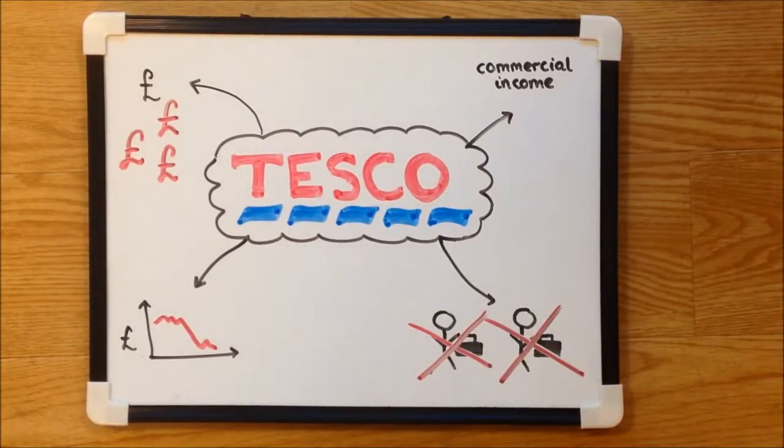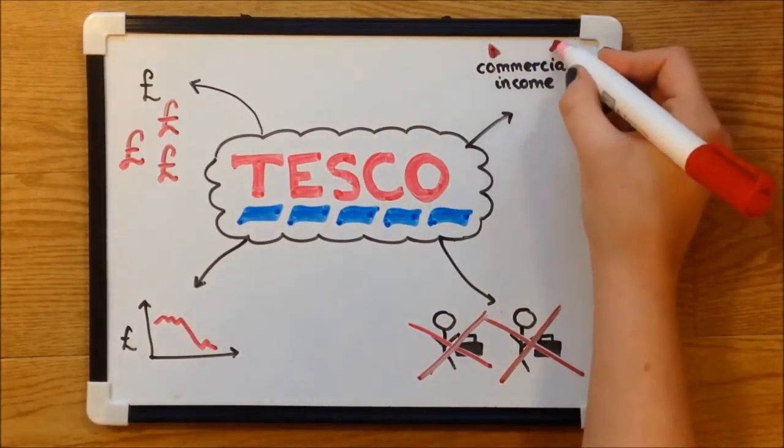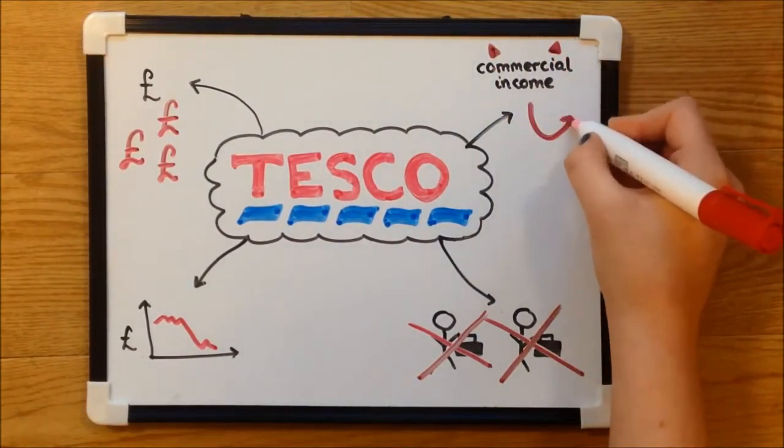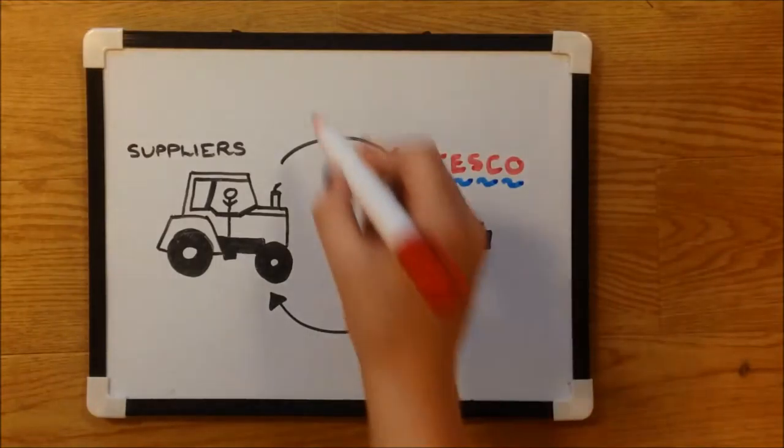Following the announcement, Deloitte began an investigation and uncovered that commercial income had been inappropriately accounted for, bringing second-half income into first-half statements. So, what happened?